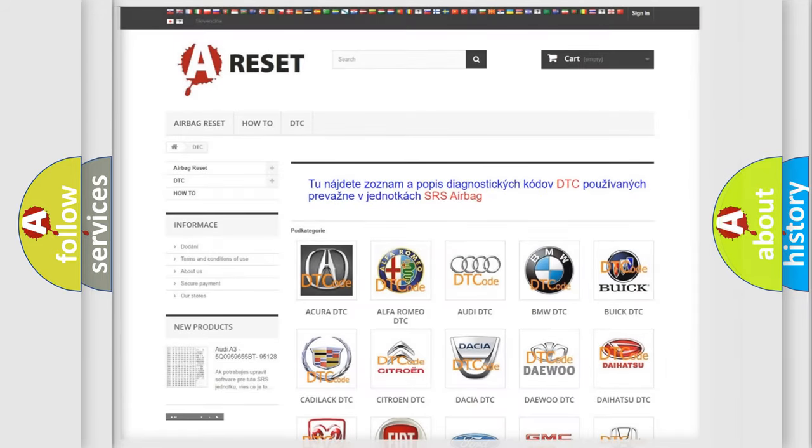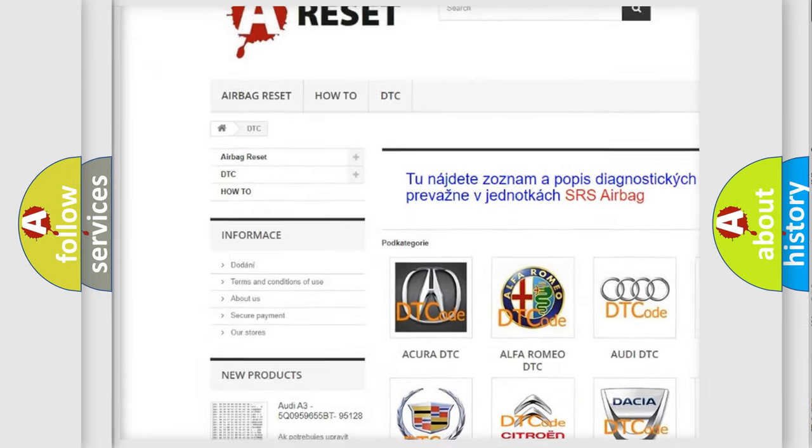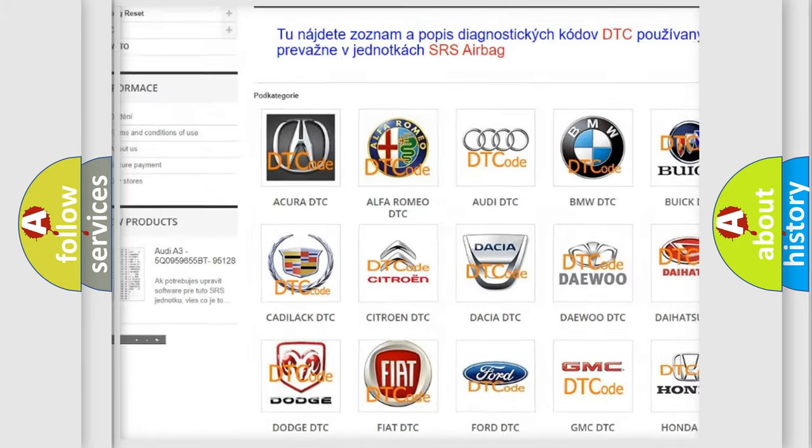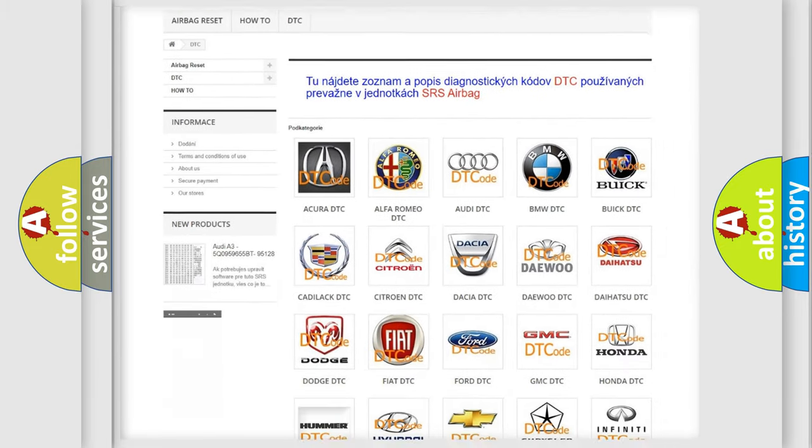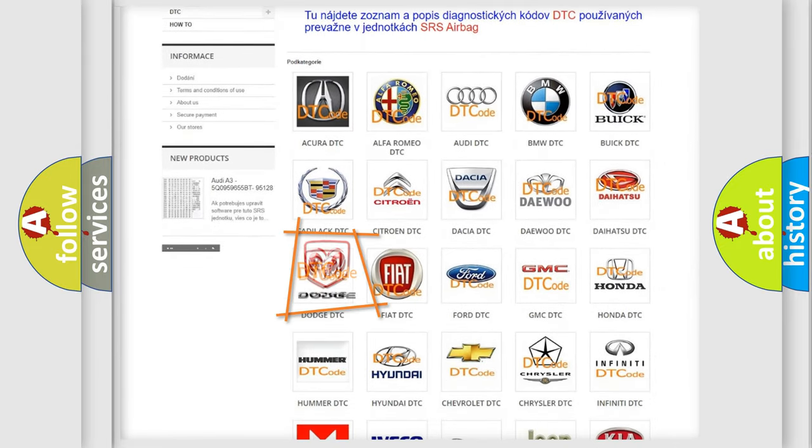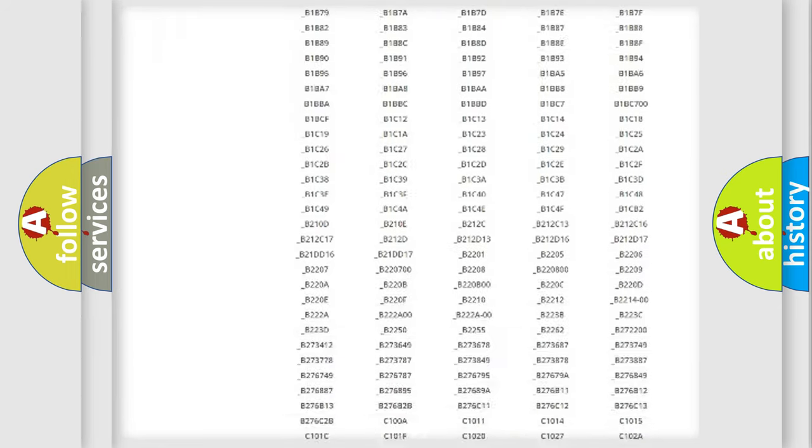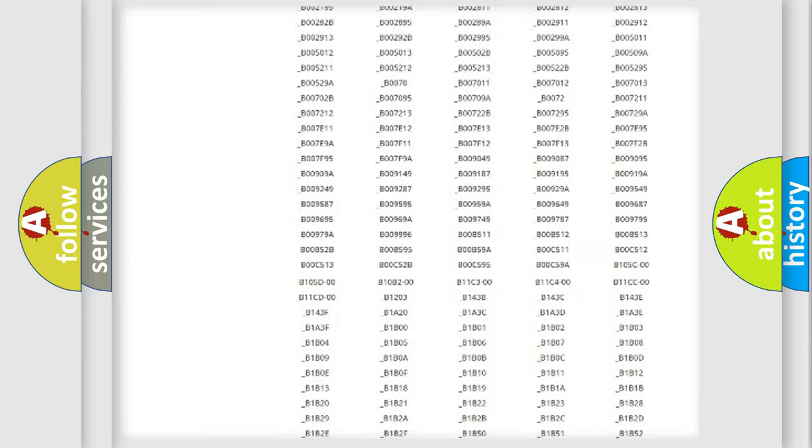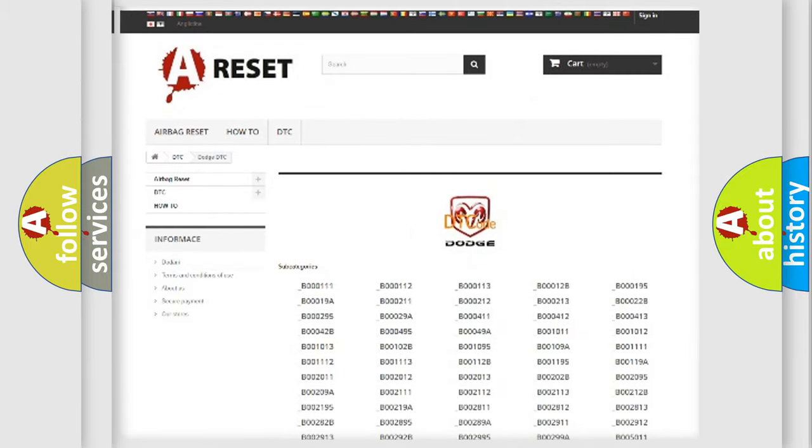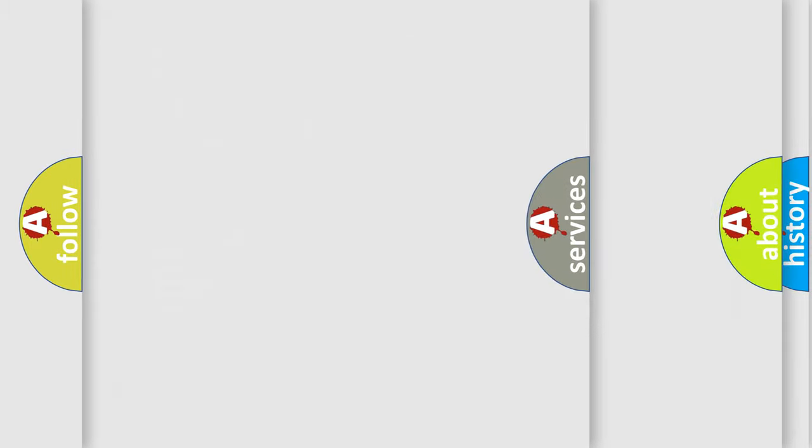Our website airbagreset.sk produces useful videos for you. You do not have to go through the OBD2 protocol anymore to know how to troubleshoot any car breakdown. You will find all the diagnostic codes that can be diagnosed in Dodge vehicles, also many other useful things.